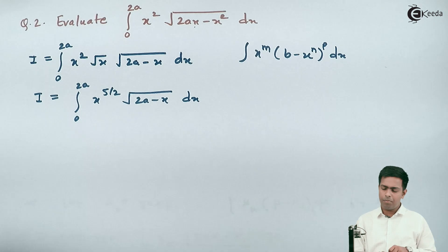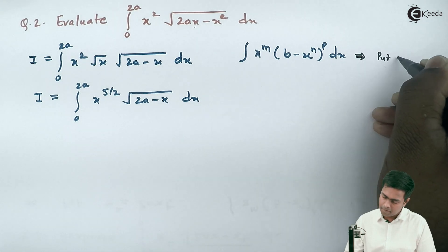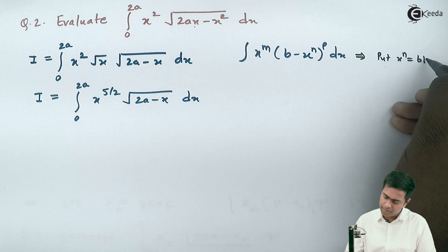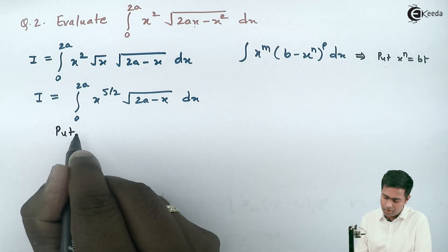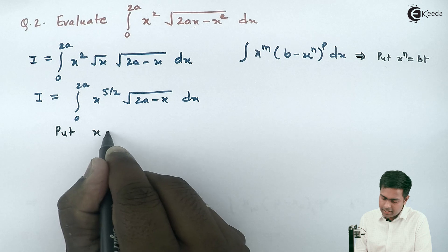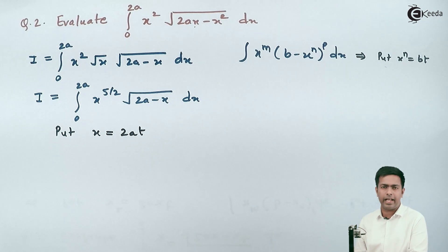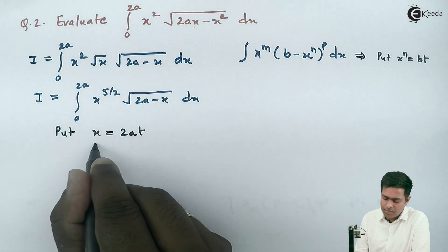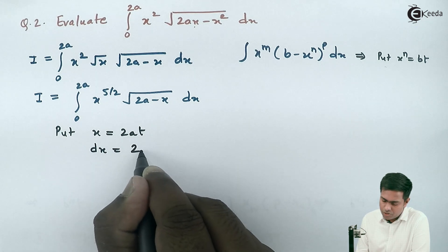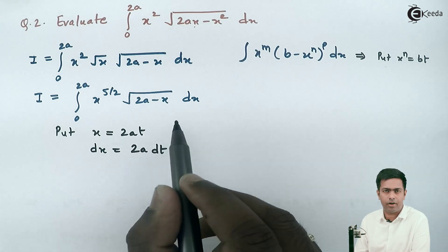In such a form, we put x raised to n as bt. So here I'll put x as 2at. By substituting x as 2at we'll evaluate this integral. This gives us dx equals 2a dt.